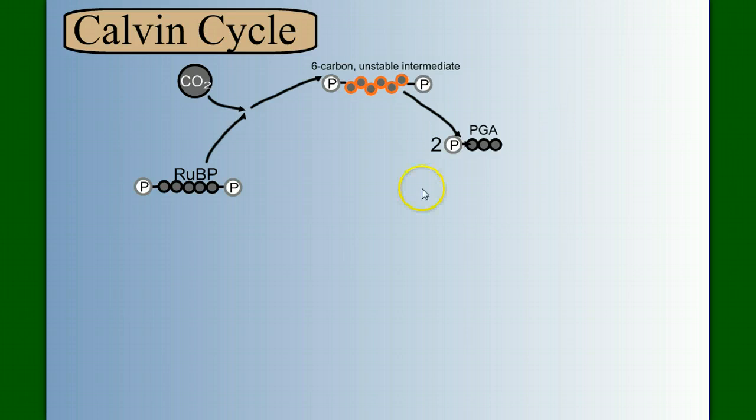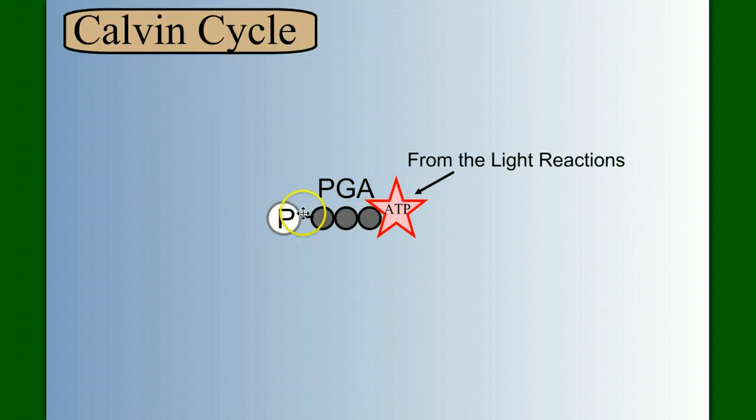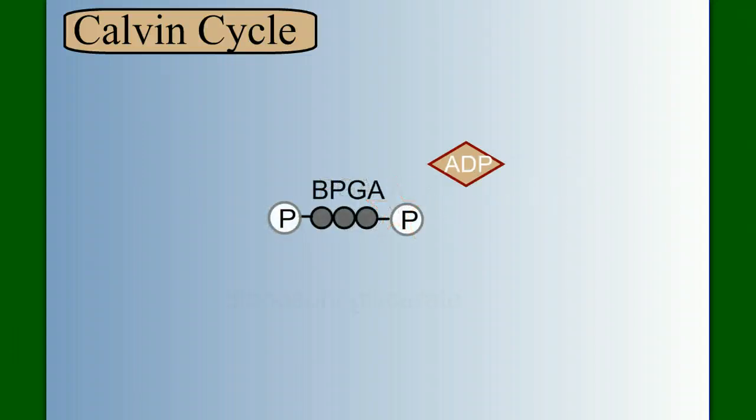So now we have PGA. And PGA gets phosphorylated, or gets energy, from ATP. Now where did the ATP come from? Recall that ATP is one of the products of light reactions. So, when this PGA engages with an ATP, it becomes BPGA, or biphosphoglycerate. And notice we have an ADP.